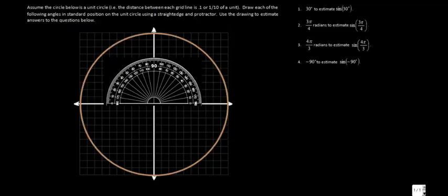There's really two approaches to this. I think probably the easiest way for you starting out is to take 3 pi over 4 and convert that into a degree measure and then use your protractor.